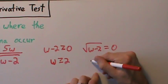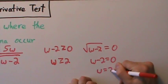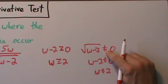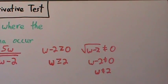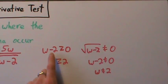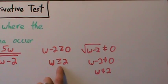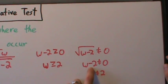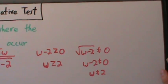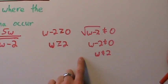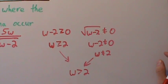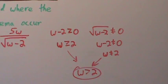So w has to be greater than or equal to 2. But also, we're dividing by the square root of w minus 2, so anything we divide by is not allowed to be 0. We set the square root of w minus 2 equal to 0, square both sides: w minus 2 equals 0, so w equals 2. That value is not allowed. So w has to be greater than or equal to 2, but not equal to 2, meaning w must be strictly greater than 2. That's our domain.